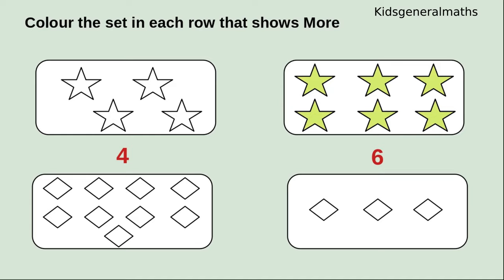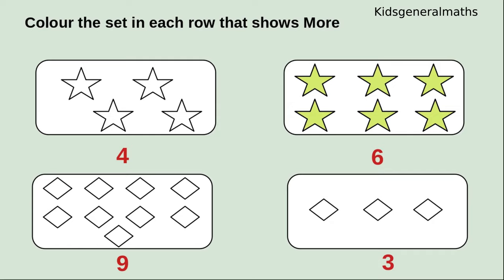Next they are given diamonds. We are going to color which is more diamonds. 1, 2, 3, 4, 5, 6, 7, 8, 9. So the first box has 9 diamonds. 1, 2, 3. So the next box has 3 diamonds. We want to color the more number. By comparing these two numbers, 9 and 3, which is more? Any guess? Yes, the number 9 is more. So we are going to color the 9 diamonds.